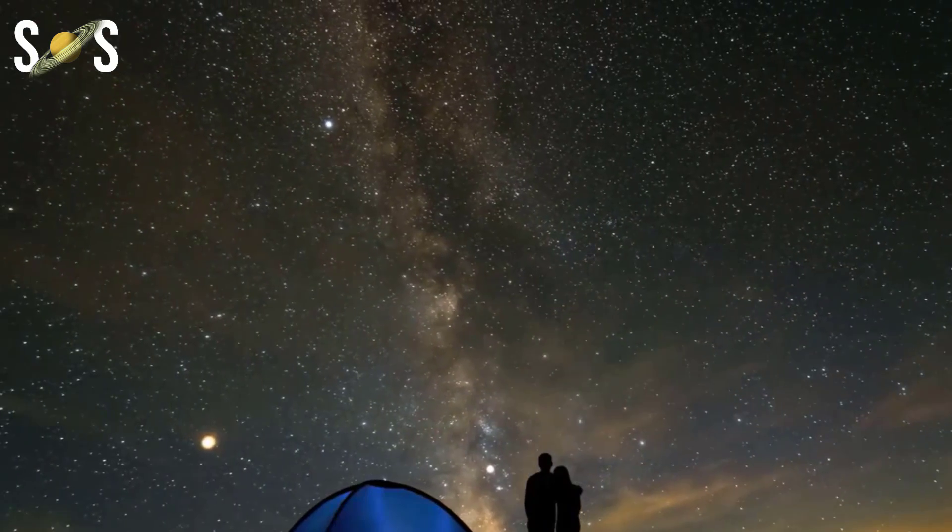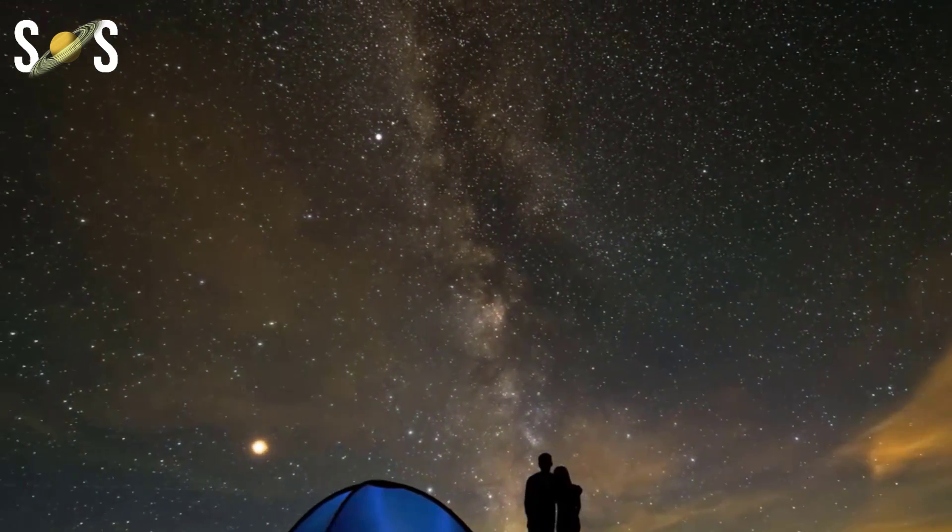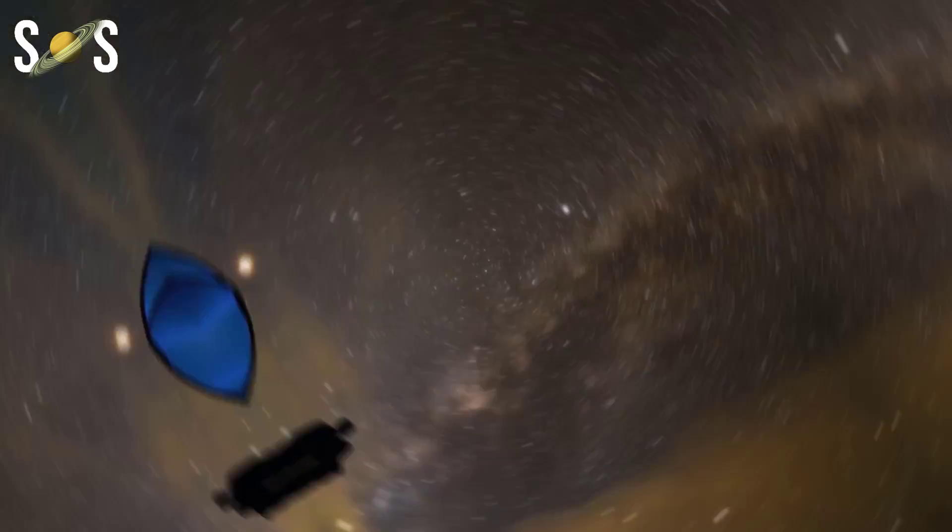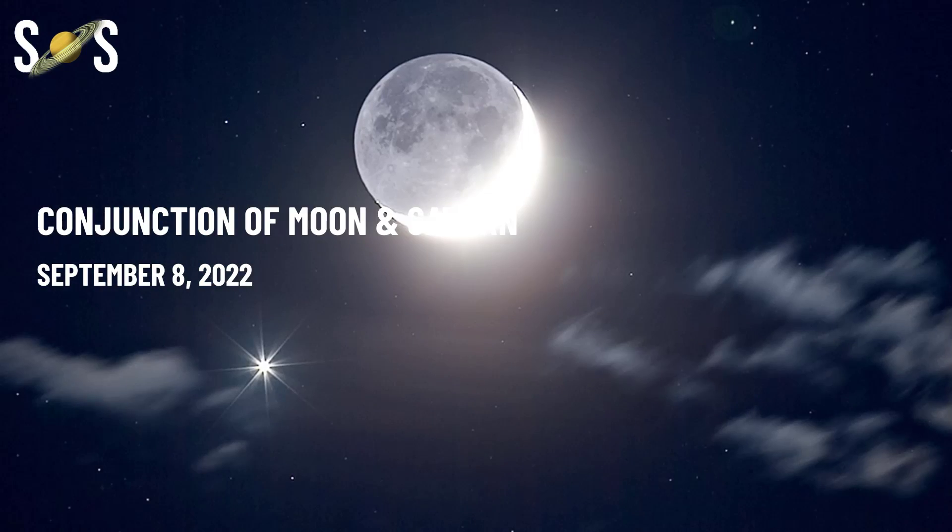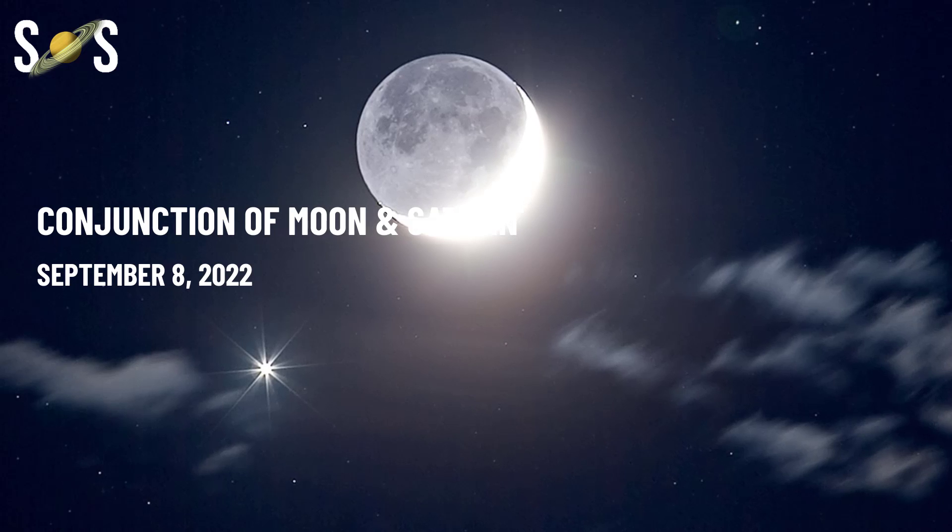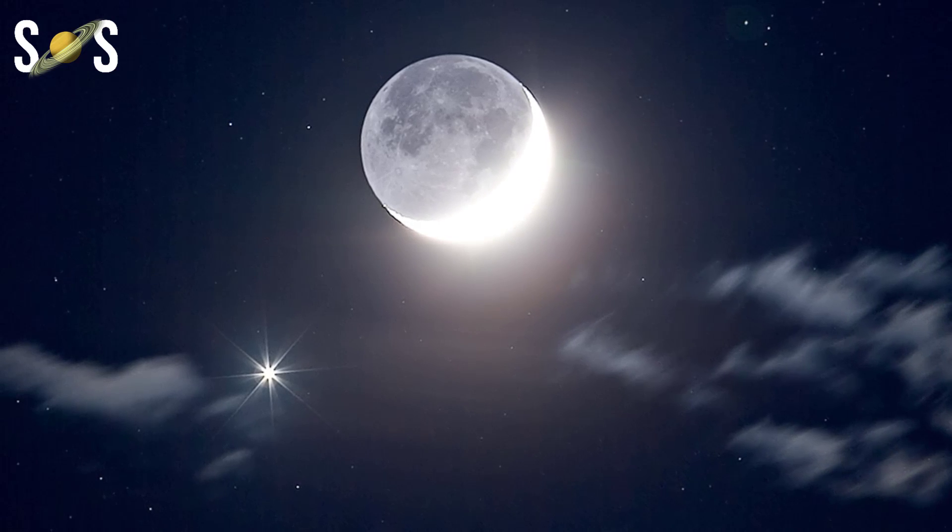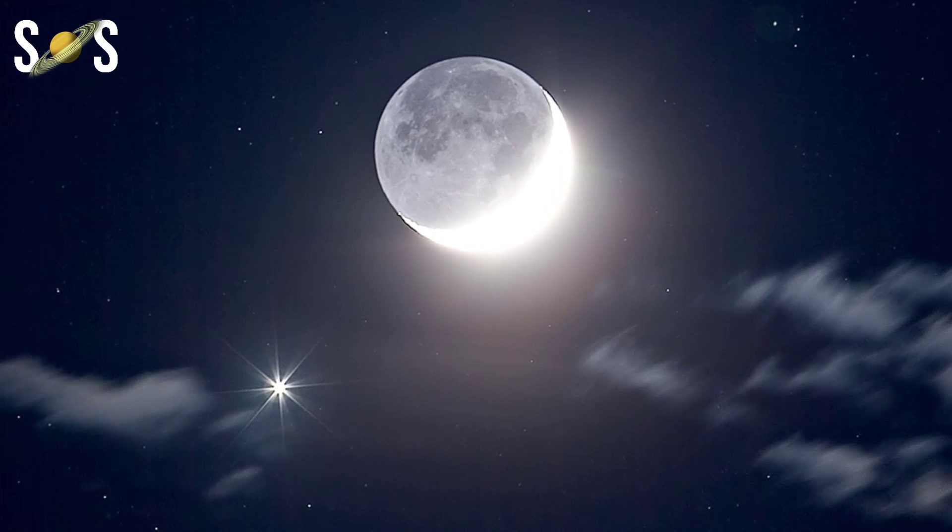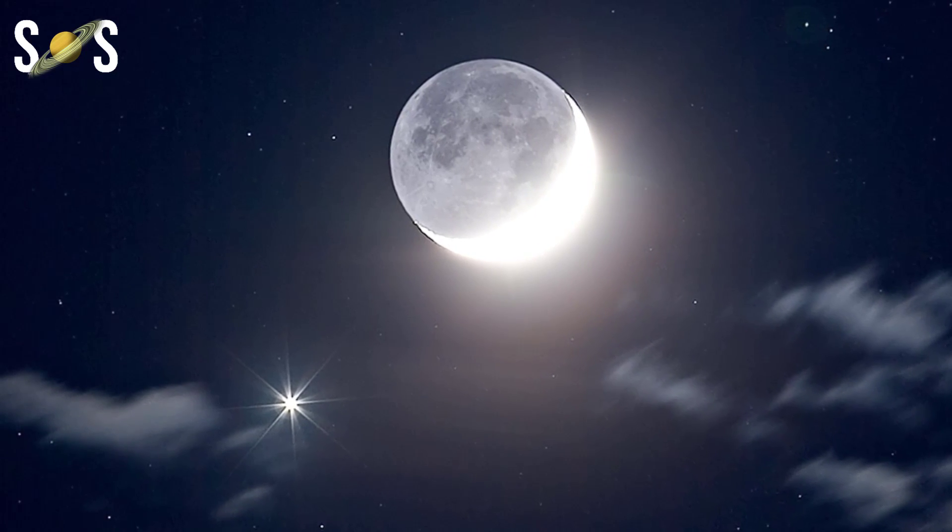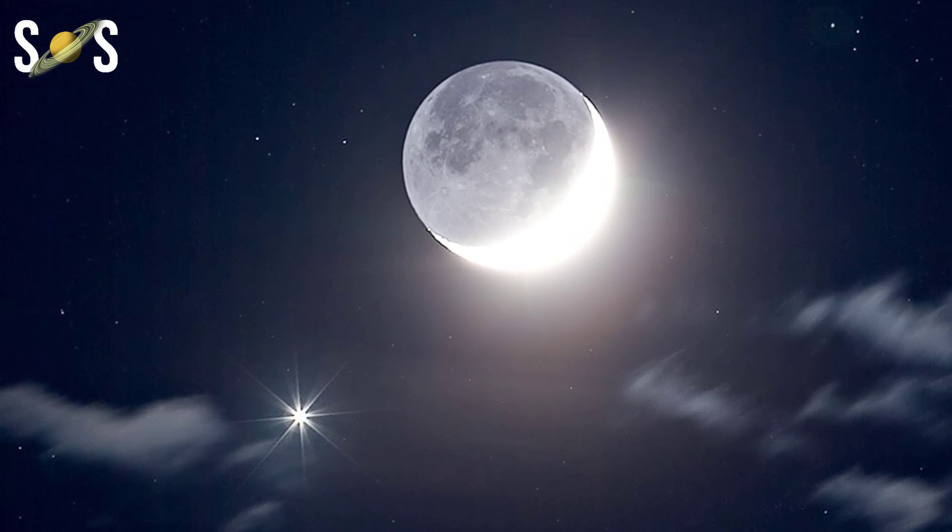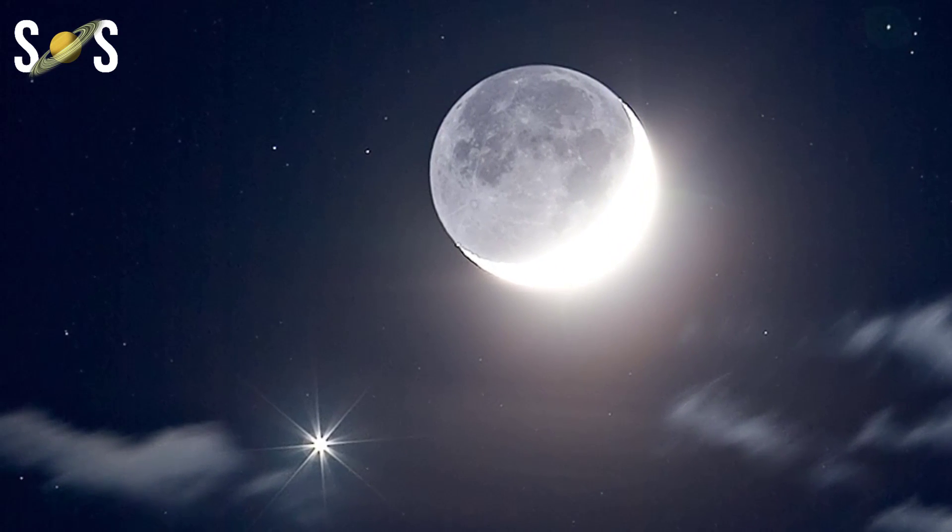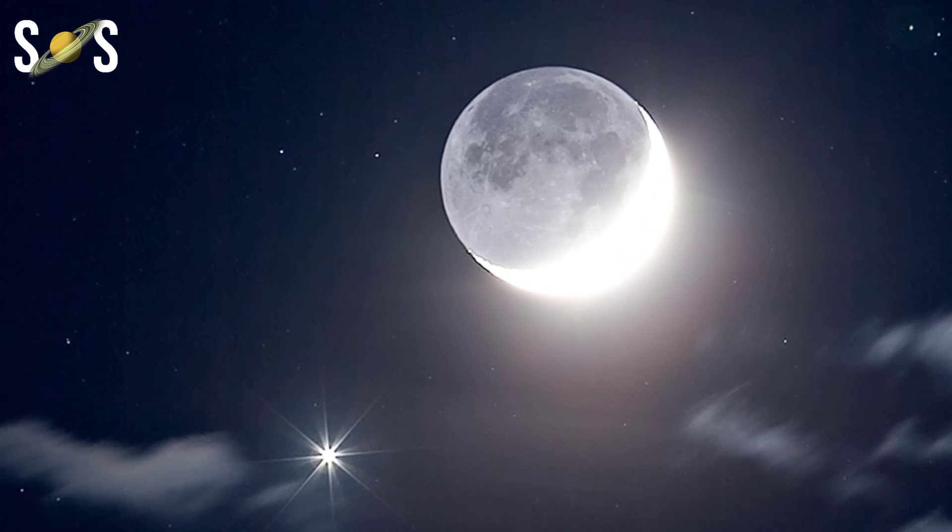September 8th, conjunction of the moon and Saturn. Continuing to explore the solar system this month, the next night is another opportunity to gaze upon a large celestial body. Specifically, Saturn and the moon will appear close together in the early morning sky on September 8th. This is called a conjunction.